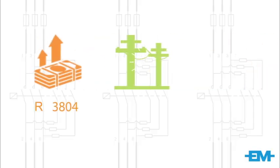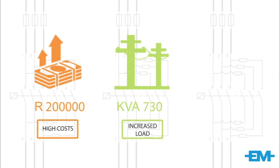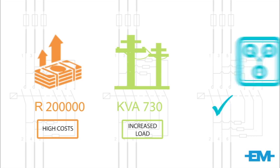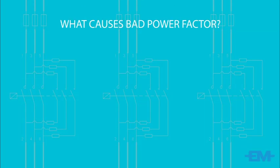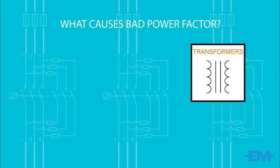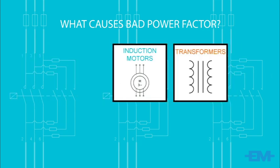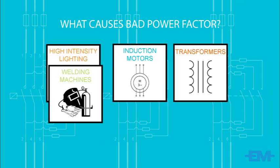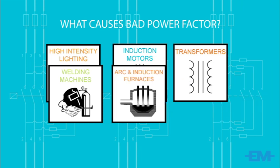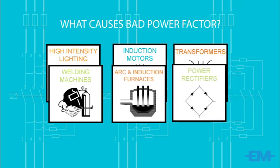Bad power factor means that money is unnecessarily spent and there is an increased load on the electrical distribution network. Both can be reduced through the use of a correctly installed power factor system. Bad power factor can come from the following sources: transformers, induction motors, high intensity discharge lighting, welding machines, arc and induction furnaces, and power rectifiers.